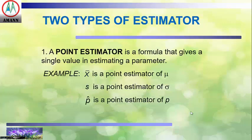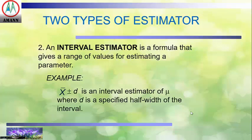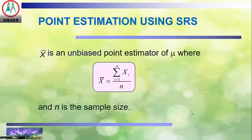There are two types of estimators. First is a point estimator: a formula that gives a single value in estimating a parameter. For example, x-bar is a point estimator of mu, s is a point estimator of sigma, and p-hat is a point estimator of p. Second is an interval estimator: a formula that gives a range of values for estimating a parameter. For example, x-bar plus or minus D is an interval estimator of mu, where D is a specified half-width of the interval. x-bar is an unbiased point estimator of mu, where x-bar equals the summation of xi from 1 to n divided by n, and n is the sample size.